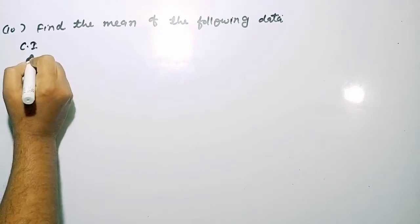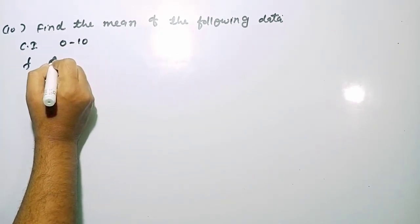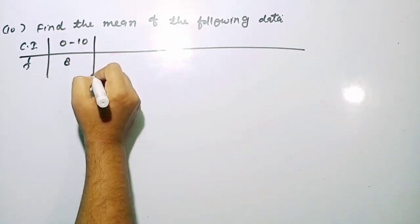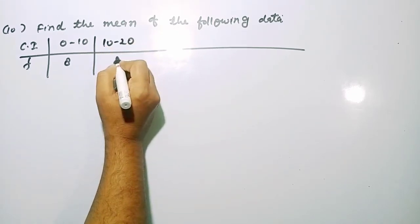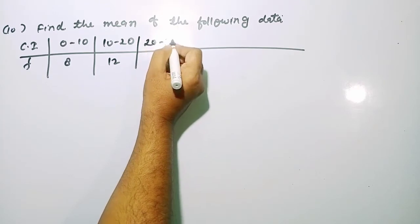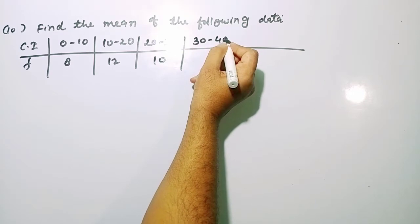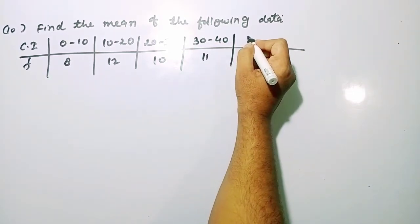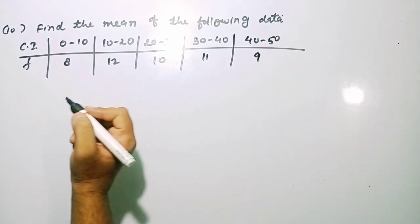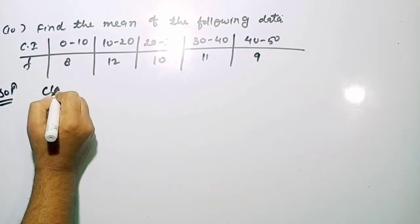Next question: class intervals 0–10, 10–20, 20–30, 30–40, 40–50 with respective frequencies 8, 12, 10, 11, 9. Finding mid-values xi: 5, 15, 25, 35, 45. We will find the mean by direct method.